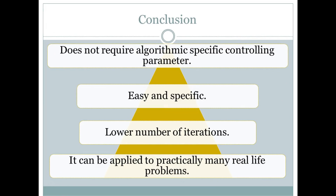In conclusion, some points specific to this algorithm: it does not need any algorithm-specific controlling parameters — only basic controlling parameters like population size and number of generations. This is a key advantage. The implementation is straightforward since we know the teaching-learning process and have only two phases. Also, a lower number of iterations are needed because in the second phase all learners are mutually learning, which enhances the learning process, so overall iterations required to reach the optimal solution are fewer.